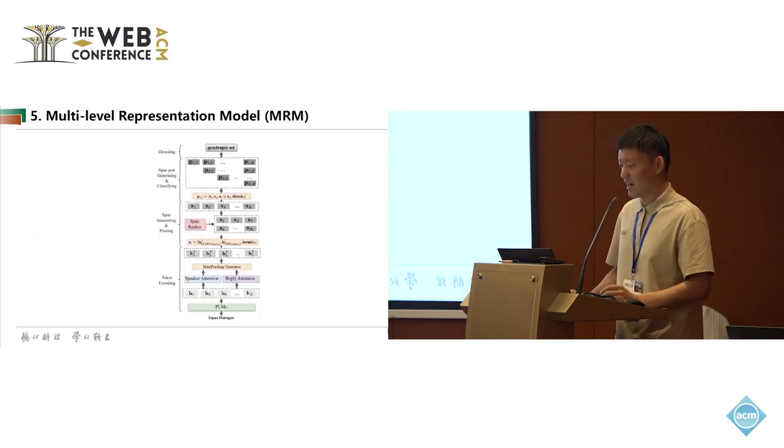Based on STS, we propose a simple and efficient multi-level representation model, MRM, which includes four parts: token encoding, span generating and pruning, span pair generating and classifying, and decoding.